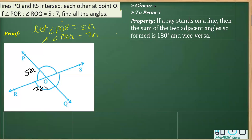So now we can say directly that the sum of these two angles, that is angle POR plus angle ROQ, is equal to 180 degrees, and this is the reason you will give, that is linear pair.